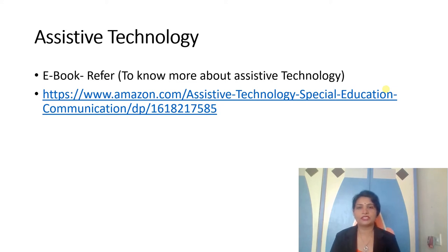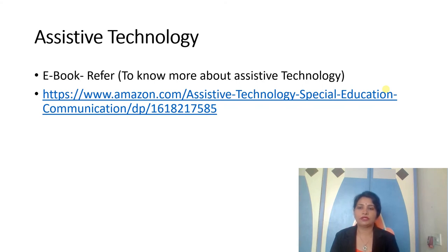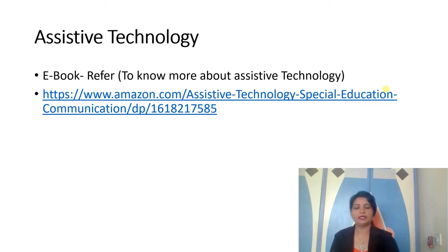To learn more about assistive technology — what is meant by assistive technology and what types are available for disabled children — references are given here: some ebook material and some websites. You just have to click on that link and read the ebook. You will get additional information about assistive technology.